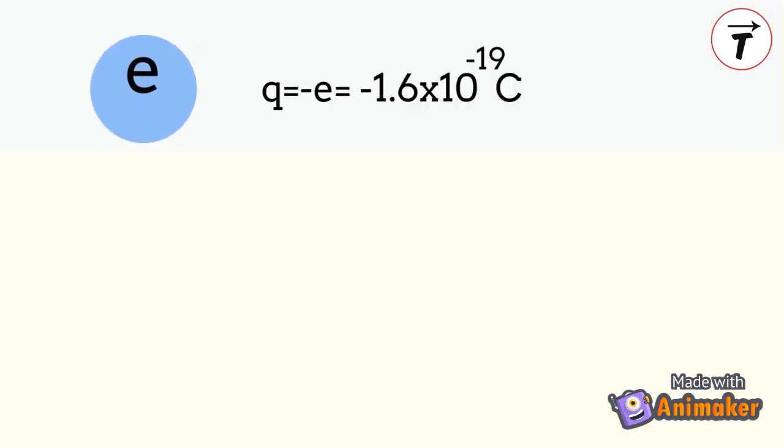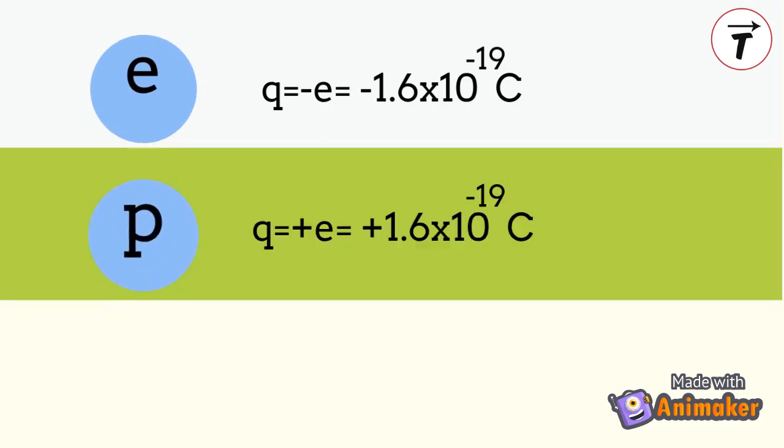The charge of an electron is negative 1.6 times 10 power minus 19 coulomb, the charge of a proton is positive 1.6 times 10 power minus 19 coulomb, and the charge of the neutron is zero.